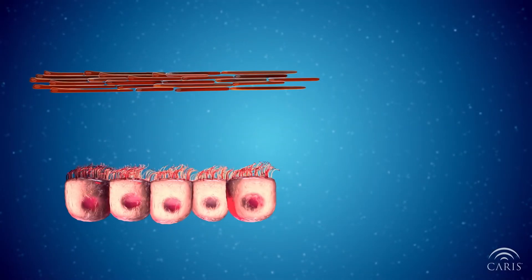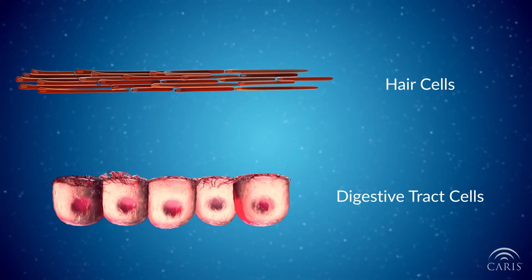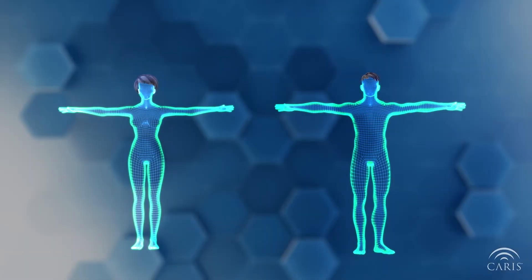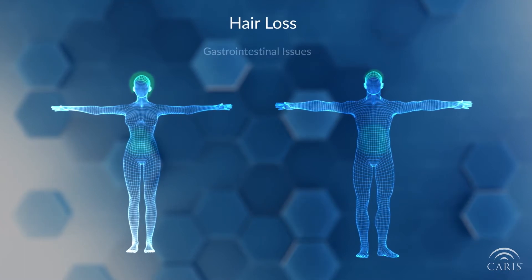Some normal cells that have a high rate of division, like hair cells and the cells lining the digestive tract, can be affected by chemotherapy. Which is why many cancer patients treated with chemotherapy experience hair loss and gastrointestinal issues.